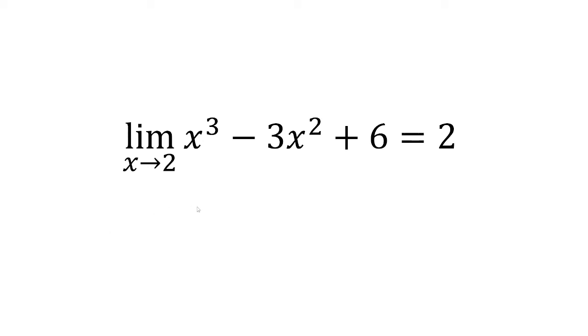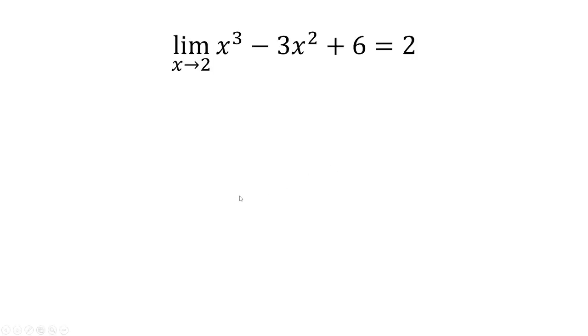In this video, we want to prove that the limit as x approaches 2 of x cubed minus 3x squared plus 6 is equal to 2 using epsilon-delta.